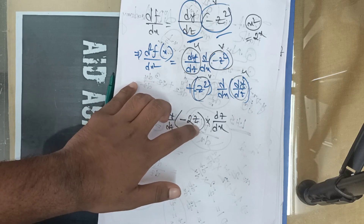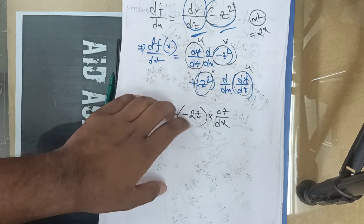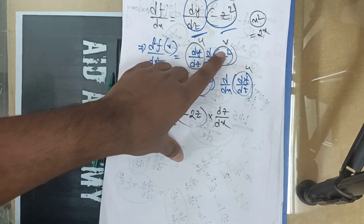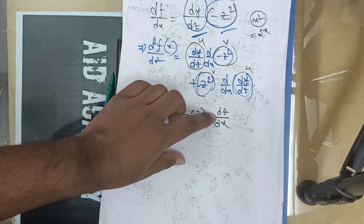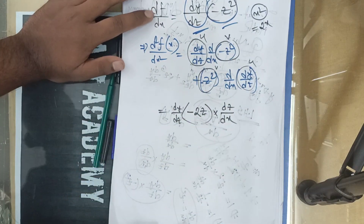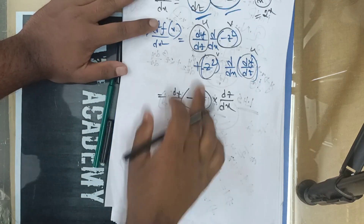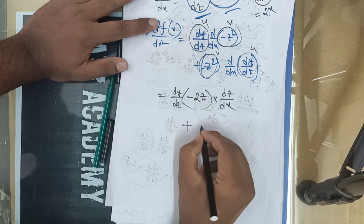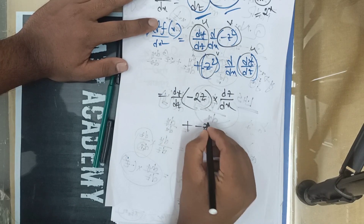What happens if z is squared — this means 2z. As you can see: x and x, z and x. Now we put plus, minus z squared.